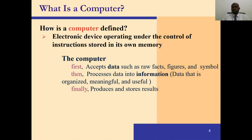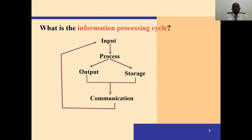A computer accepts data, processes it into information, and per this explanation one can see the computer processes data using three stages: the input stage, the processing stage, and the output stage. The stages that data goes through before coming out as information is called the information processing cycle. It is a cycle because when data is finally output, it can go back into the input stage — an output to one person can be an input to another.